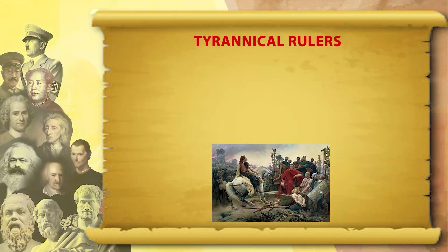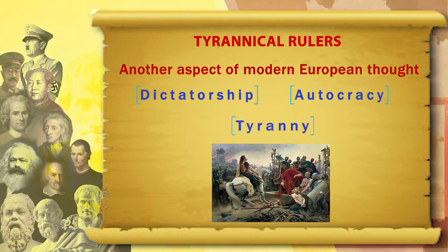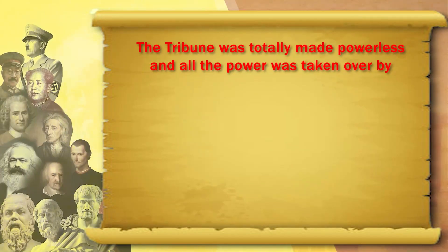The second part of Roman state formation brings the time of tyrannical rulers — tyranny and dictatorship. Another aspect of modern European thought, dictatorship and autocracy, has its roots in ancient Rome. The first dictator, the first absolute ruler, the first absolute king was Julius Caesar. Julius Caesar bypassed the Senate, the tribune was made totally powerless, and all power was taken over by Julius Caesar.